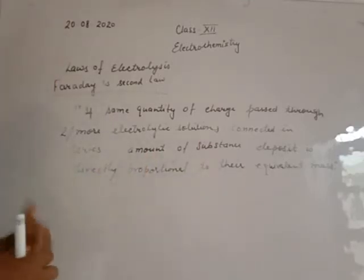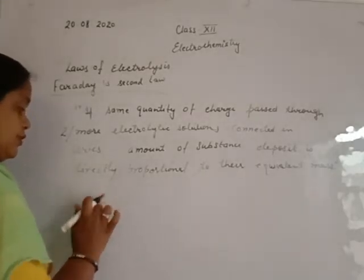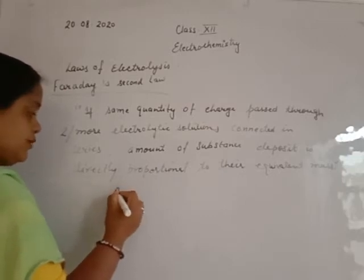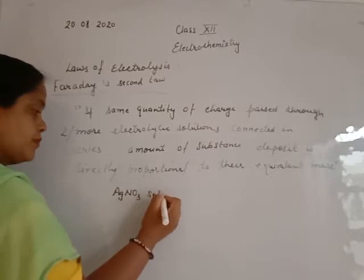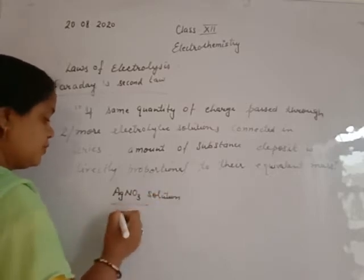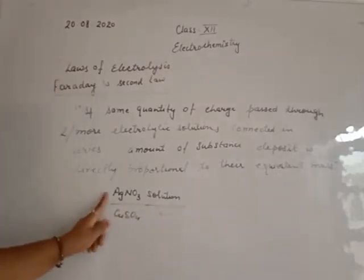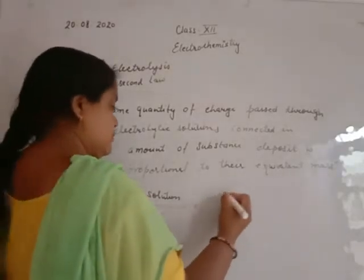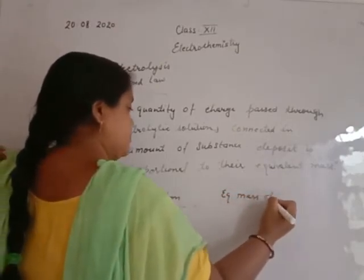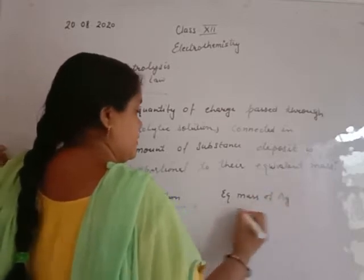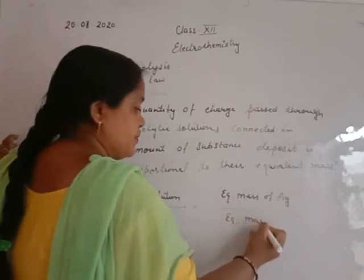For example, suppose we have two solutions: a solution of AgNO3 and a solution of Copper Sulphate. The amount of Silver deposited is equal to the equivalent mass of Silver, and the amount of Copper deposited is equal to the equivalent mass of Copper.